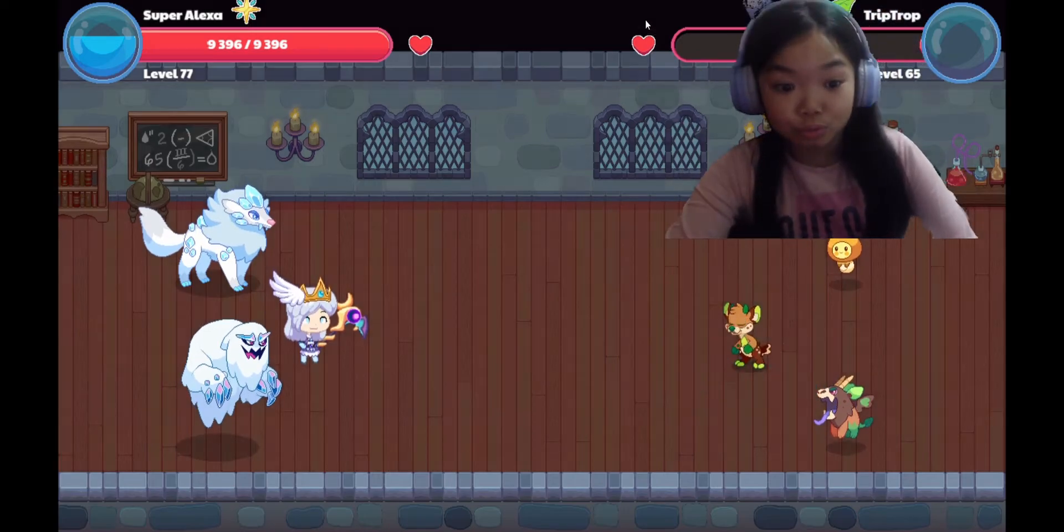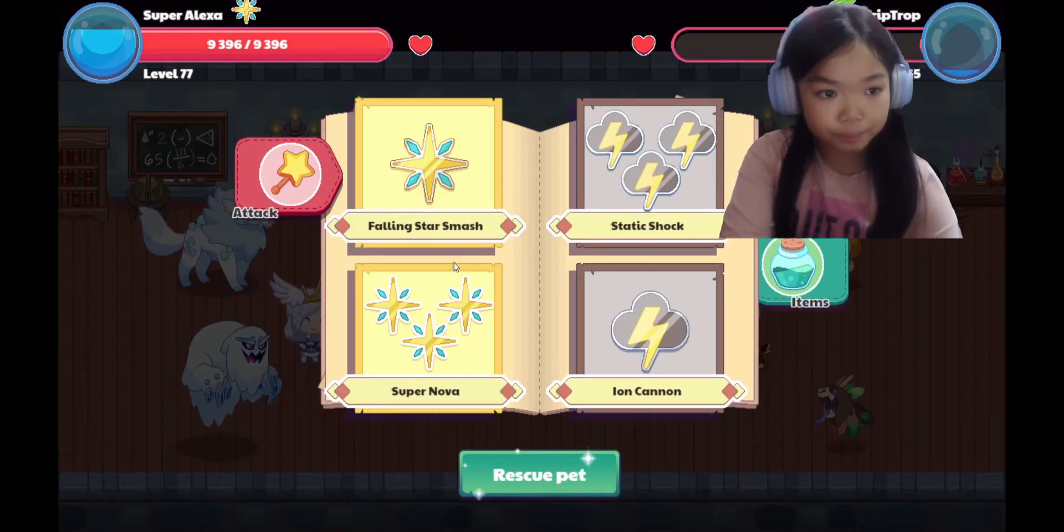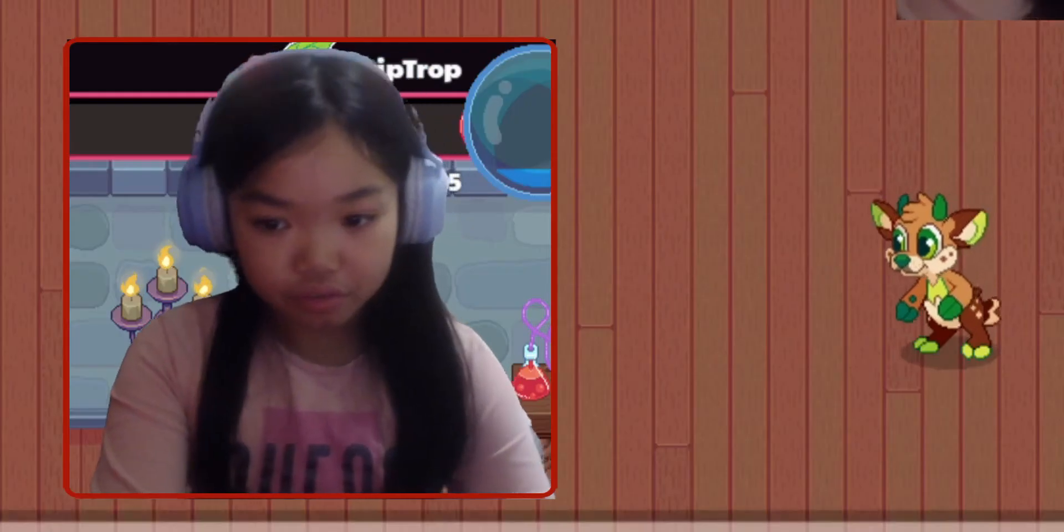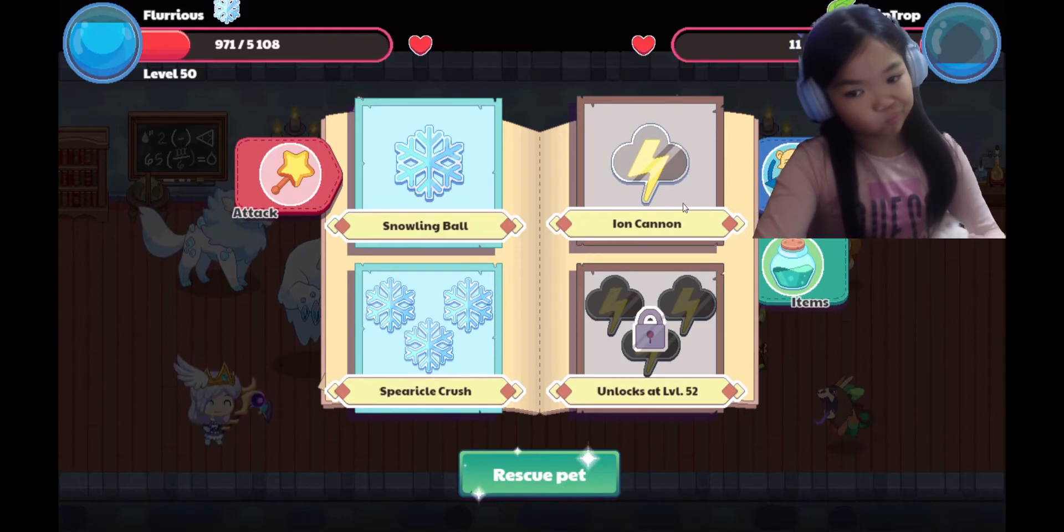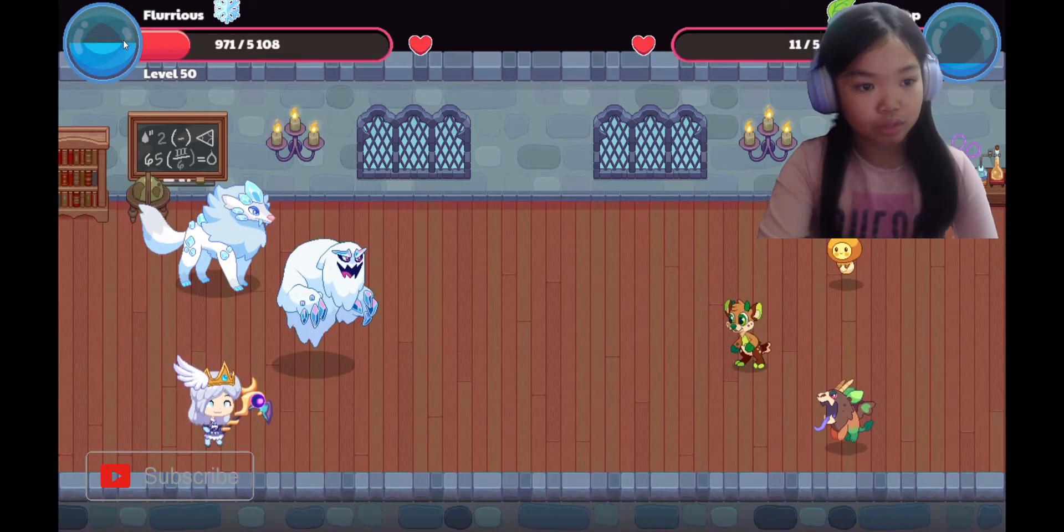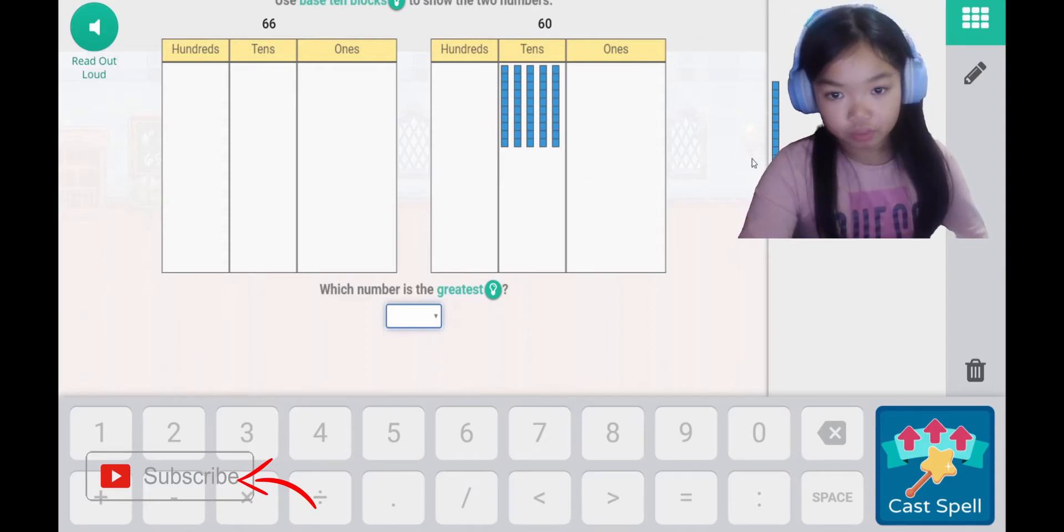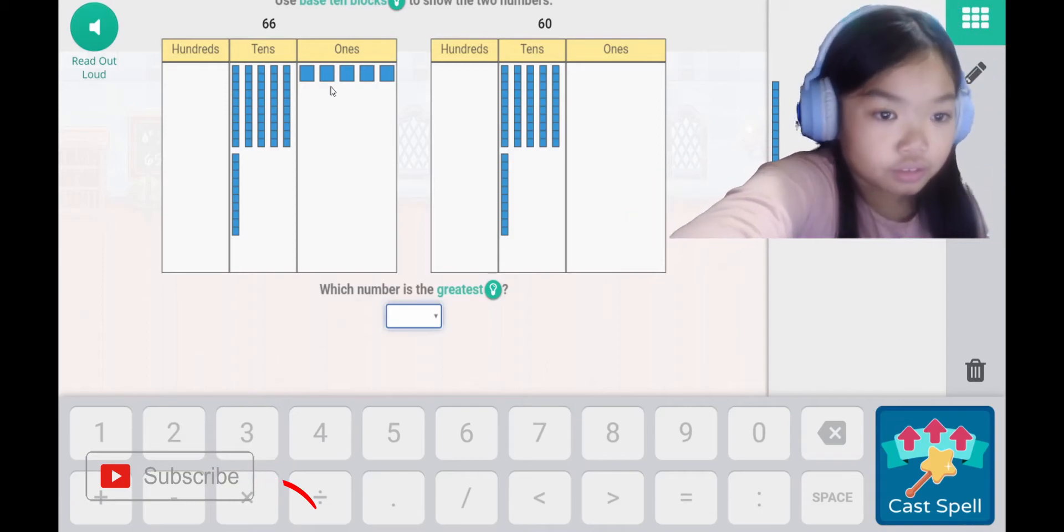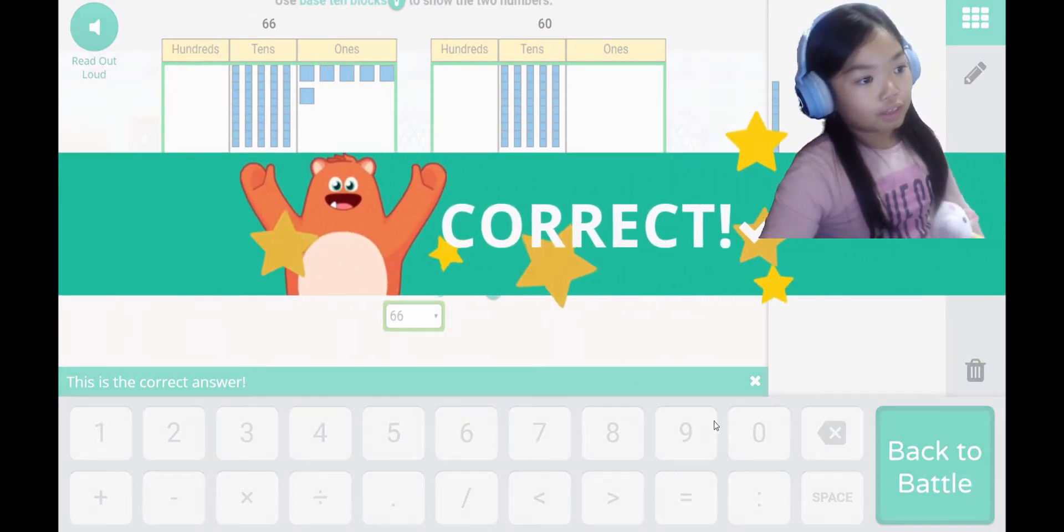Let's switch it up. Furious. Let's use this one. That wasted a lot. Use base 10 blocks to show the two numbers. So we've got 6 on one side and 6 on the other side also. 1, 2, 3, 4, 5, 6. And 1, 2, 3, 4, 5, 6. Great. 1, 2, 3, 4, 5, 6. Which number is the greatest? 66 because zero is lesser than 6.